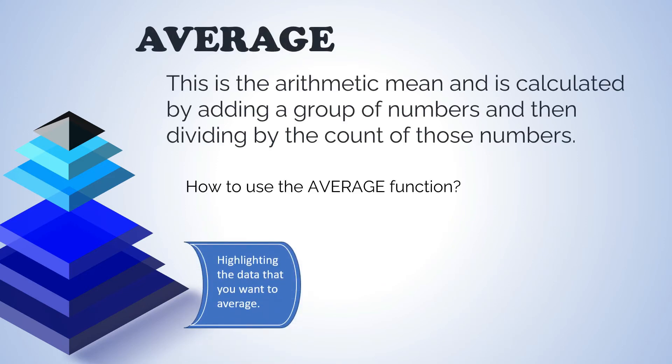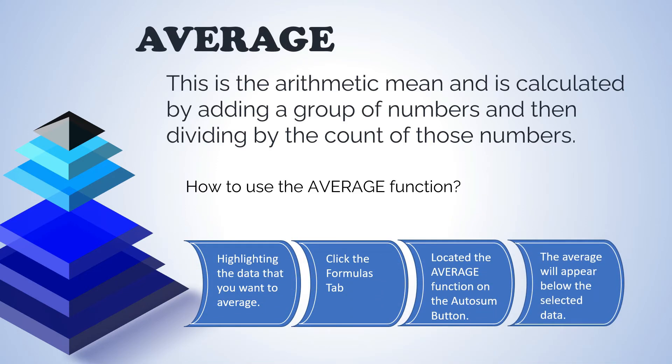The next function is average. This is the arithmetic mean and is calculated by adding a group of numbers, and then dividing by the count of those numbers. Here is how to use the average function. First, highlight the data that you want to average. Second, click the formulas tab. Third, locate the average function on the auto sum button. And fourth, the average will appear below the selected data.